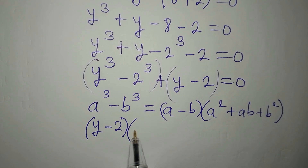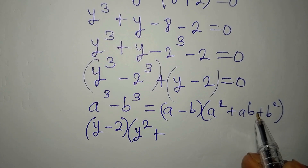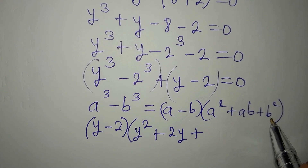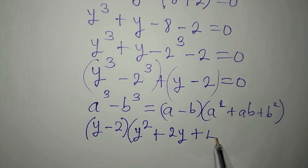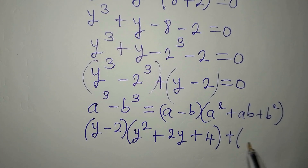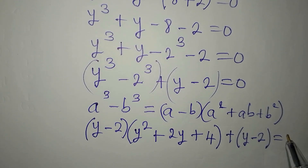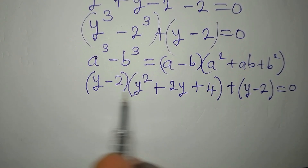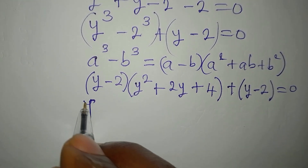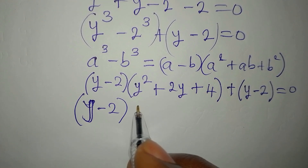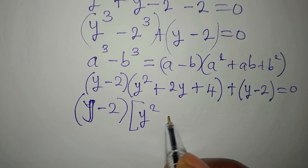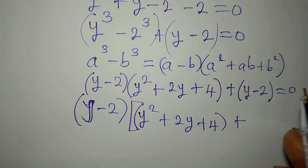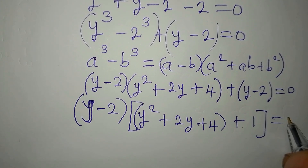So we write (y minus 2) times (y squared plus 2y plus 4), plus (y minus 2) equals 0. We discover that y minus 2 is a common factor, so factorizing gives (y minus 2) times (y squared plus 2y plus 4 plus 1) equals 0, which is (y minus 2)(y squared plus 2y plus 5) equals 0.